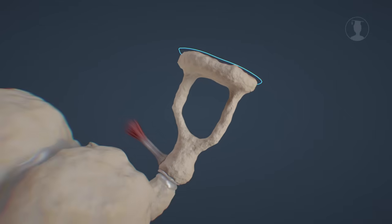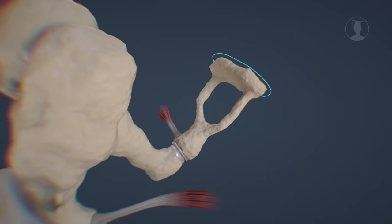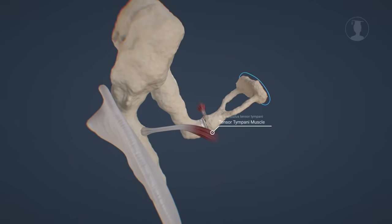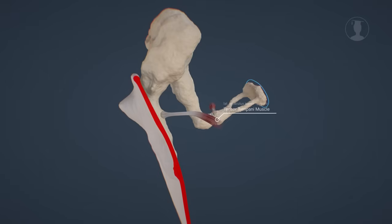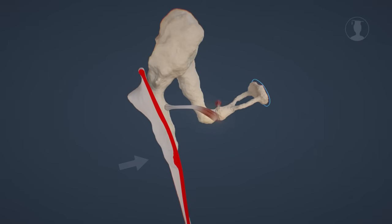Another muscle that contracts when the sound level is too high is the tensor tympani. It pulls the malleus back, and thus tightens the eardrum so that it can absorb less sound energy, and therefore vibrates less.